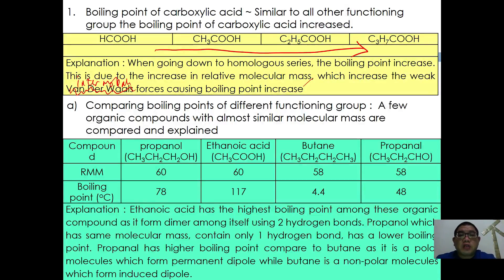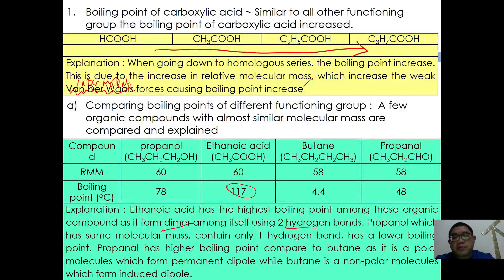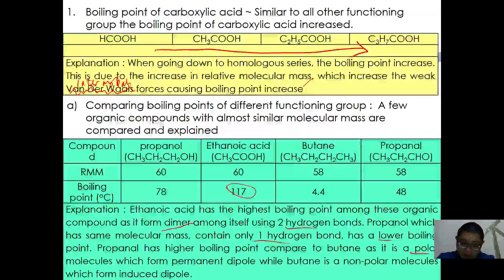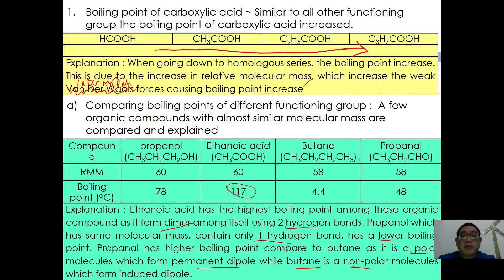Comparing the boiling points of different functional groups with similar molecular mass, carboxylic acid has the highest boiling point because it can form dimers with itself using two hydrogen bonds. Propanol, with a similar molecular mass, contains only one hydrogen bond, so has a lower boiling point. Propanol has a higher boiling point than butane because propanol is polar and forms permanent dipole forces, whereas butane is nonpolar and only forms induced dipole forces.